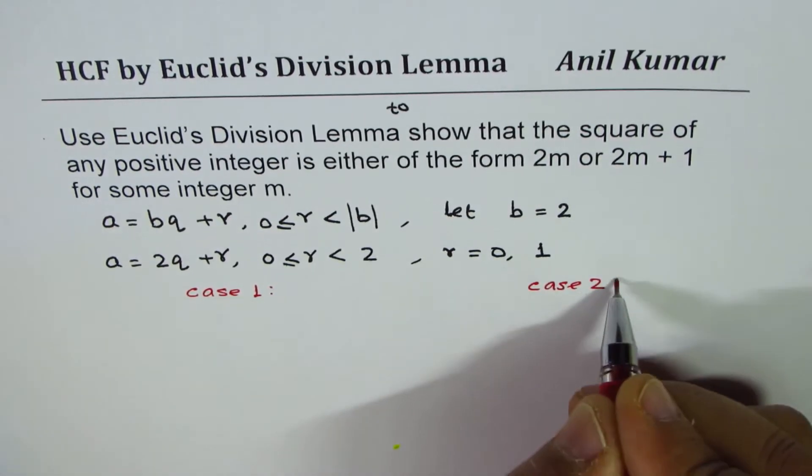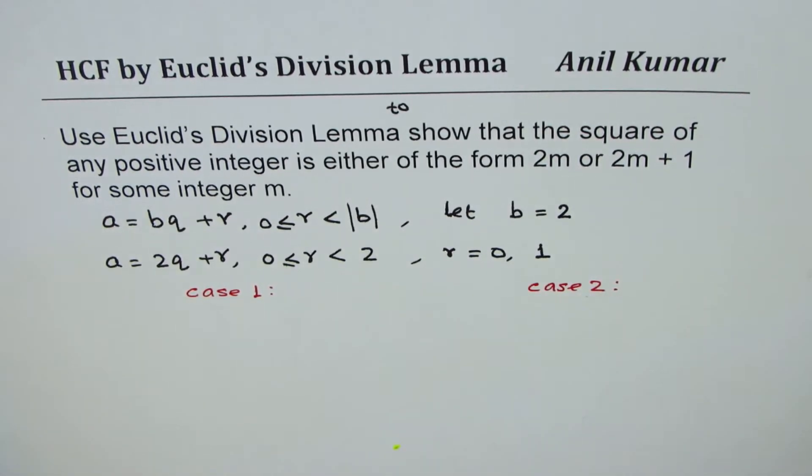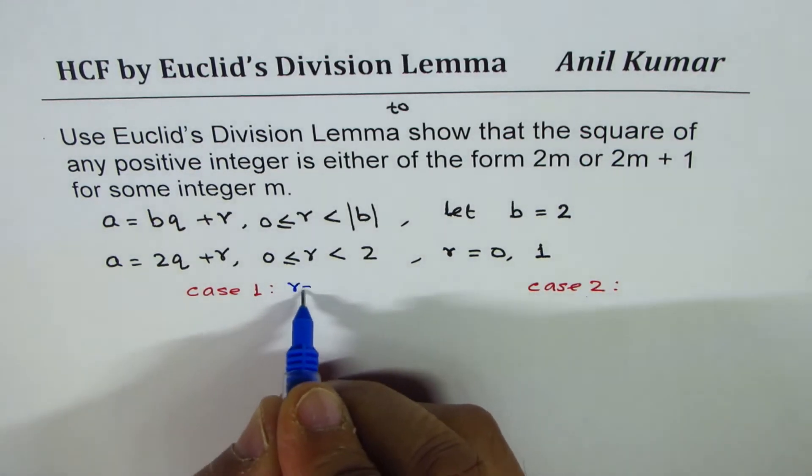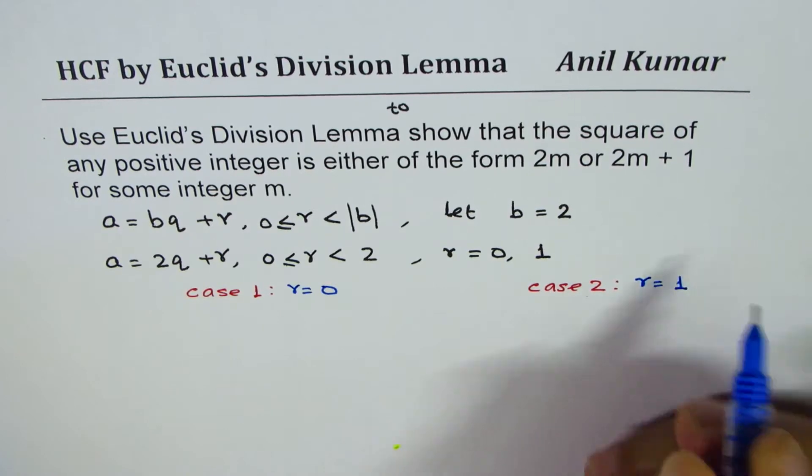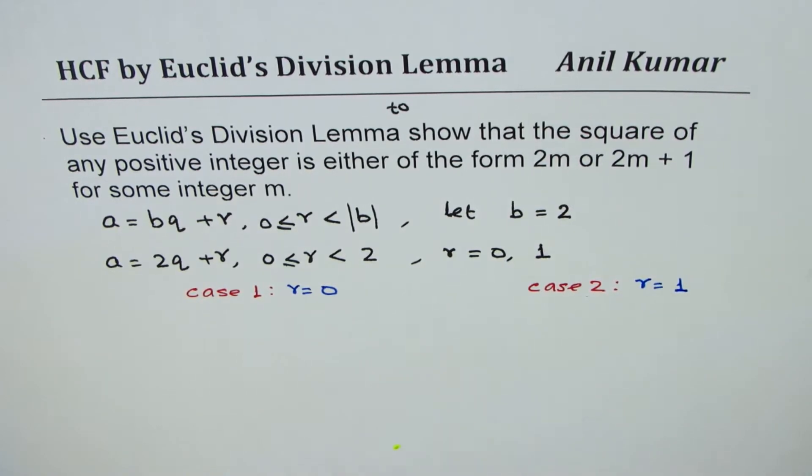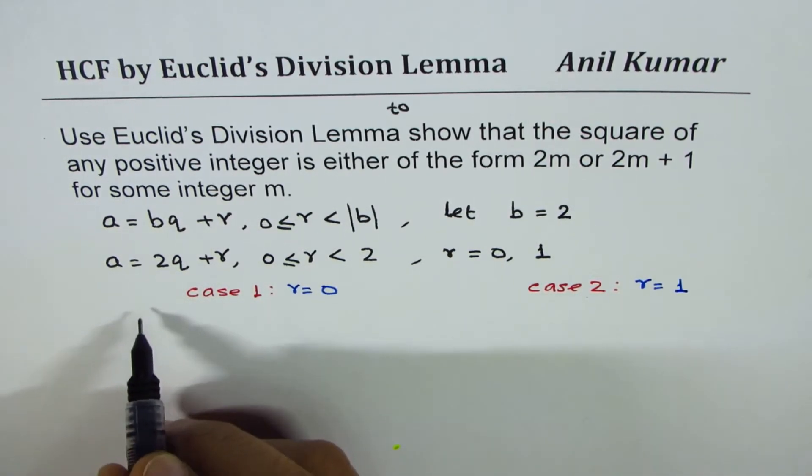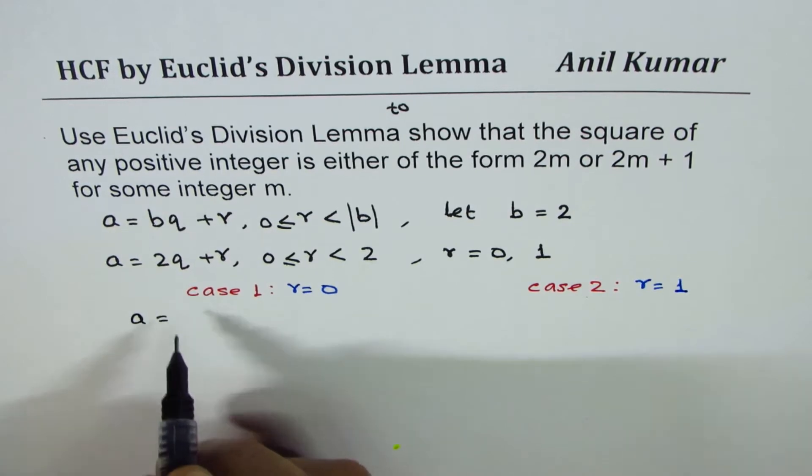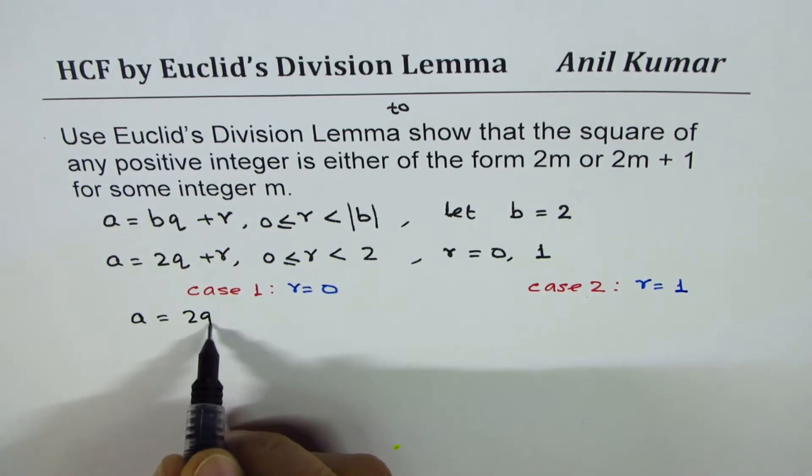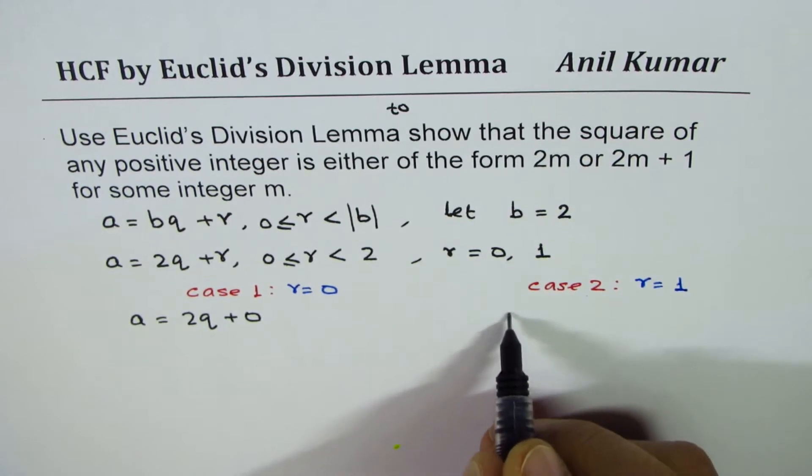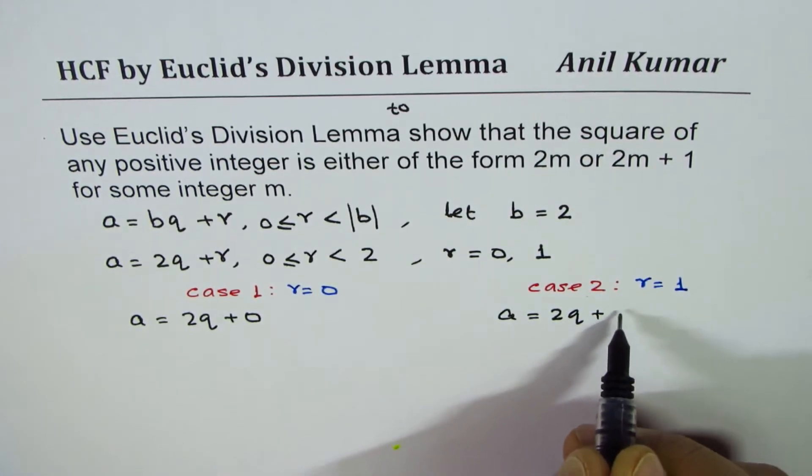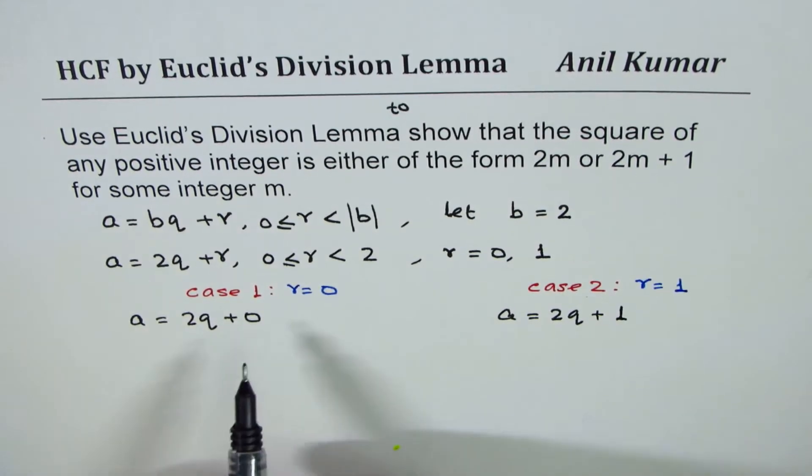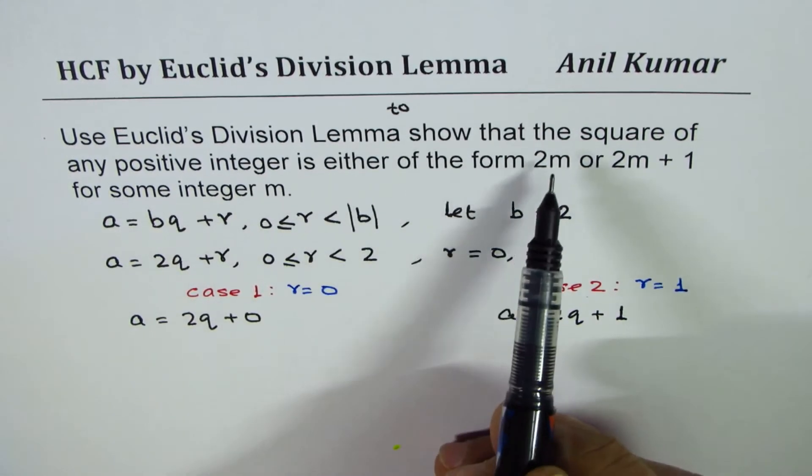Case 1 is for r = 0, and Case 2 is for r = 1. Then we'll continue with this: a = 2q + 0, and in this case a = 2q + 1. We are interested in